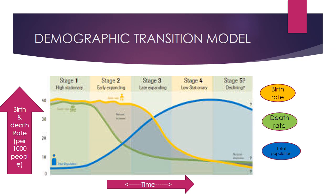The yellow line denotes the birth rate — whether it is high or low. The green line denotes the death rate — the current death rate is shown by this green line. The blue line is used to denote the total population. On the x-axis you have time, and on the y-axis you have birth and death rate per thousand people.